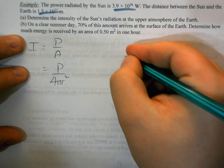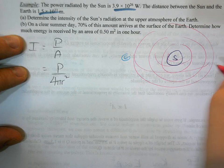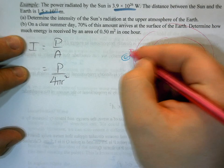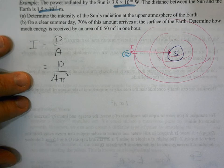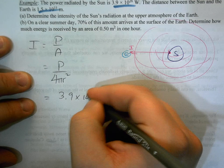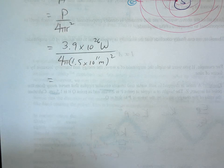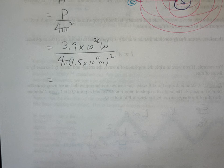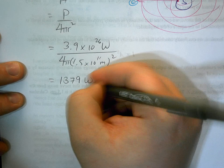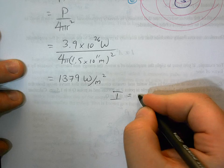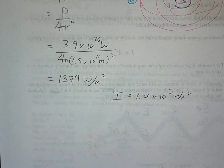Here's the sun and here's the earth. The light radiates outward in all directions in that concentric sphere, and we want the intensity at the earth's surface, with r = 1.5 × 10¹¹ m. So I = (3.9 × 10²⁶) / (4π × (1.5 × 10¹¹)²), which gives approximately 1,379 watts per meter squared, or about 1.4 × 10³ watts per meter squared at the upper atmosphere.